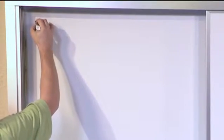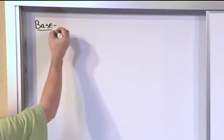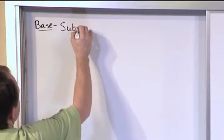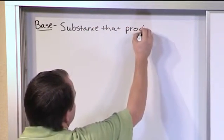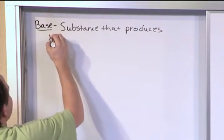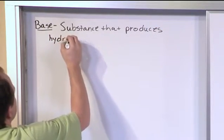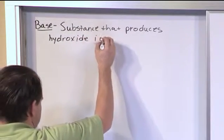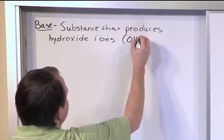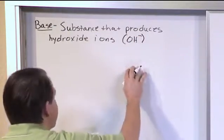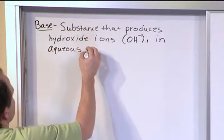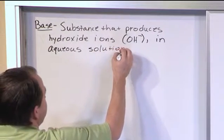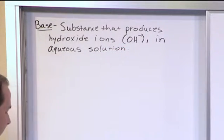So a base is a substance that produces hydroxide ions. These are the ions that look like OH negative in aqueous solution. They produce hydroxide ions.